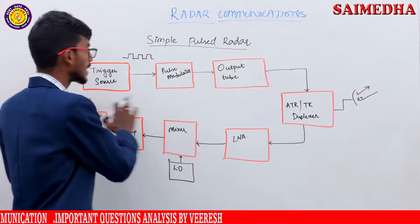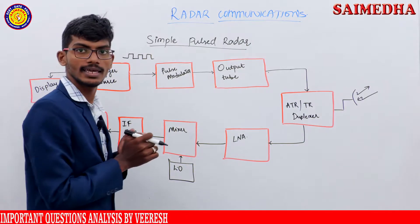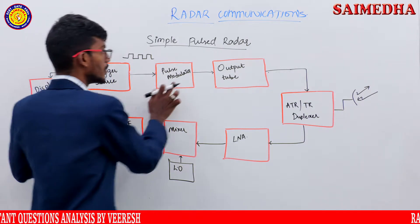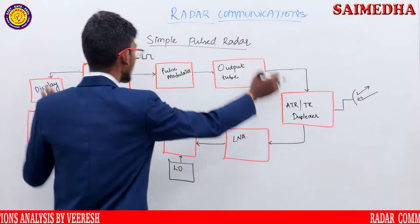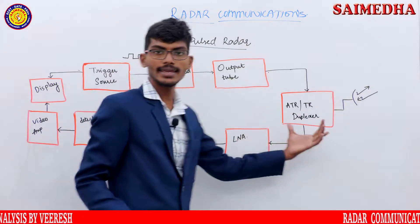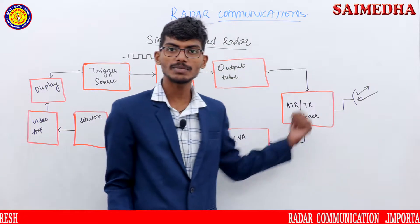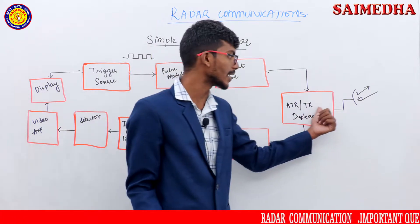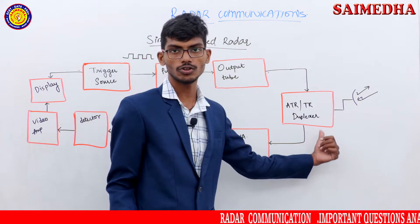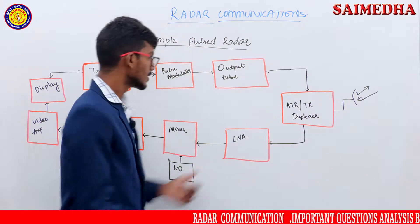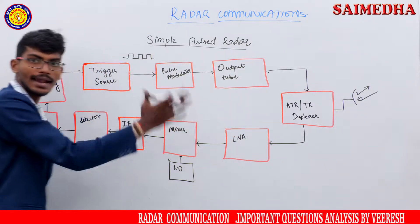So this simple pulsed radar consists of the transmitting stage. The transmitting stage includes the trigger source, pulse modulator, and the output tube. After the transmitting stage, there is the duplexer. The duplexer uses a single antenna to connect both the transmitter and the receiver. After the duplexer comes the receiver, which is the same as a standard receiver stage.